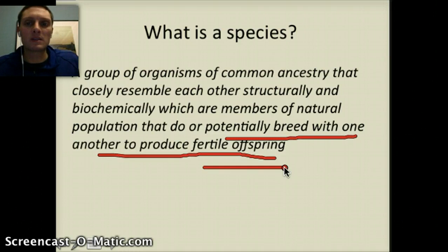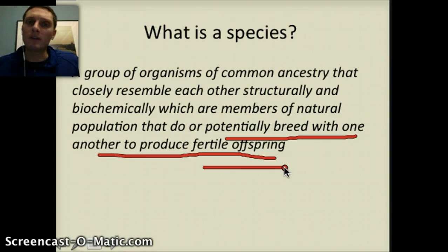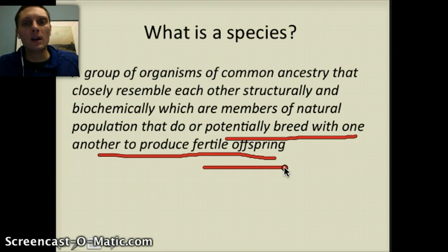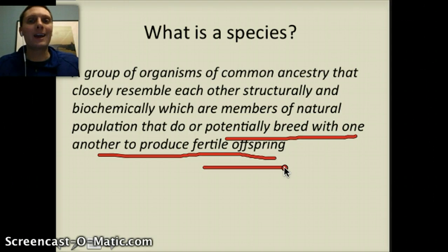Sometimes organisms can reproduce, but if their offspring are not fertile — meaning not able to reproduce — it doesn't really mean anything. That organism is not going to be able to pass on its genes. So one of the key ways to distinguish between two different species is whether they can reproduce and produce fertile offspring.